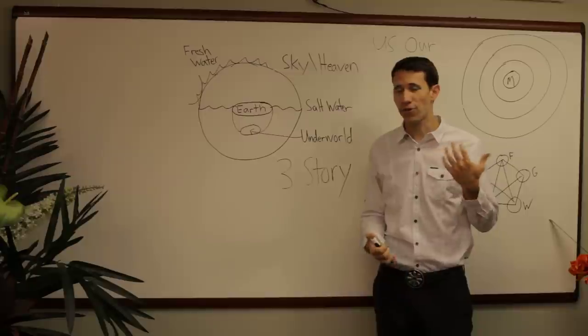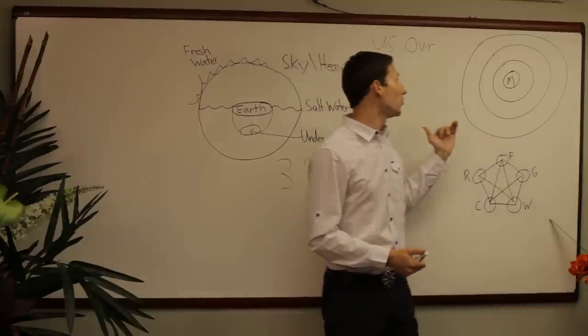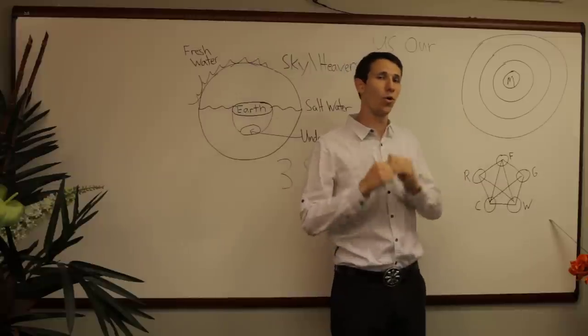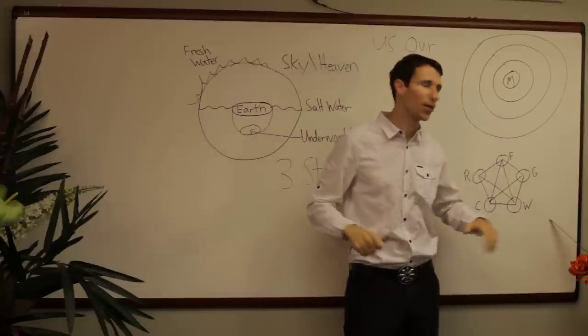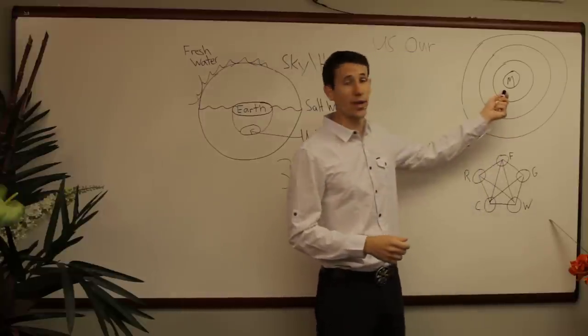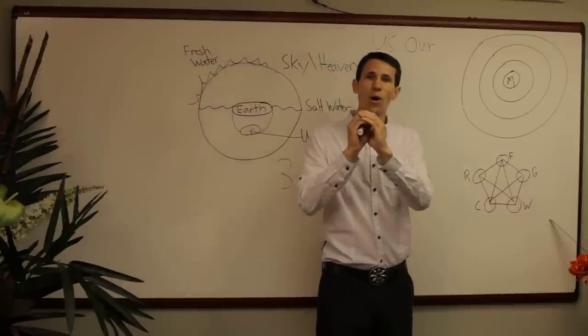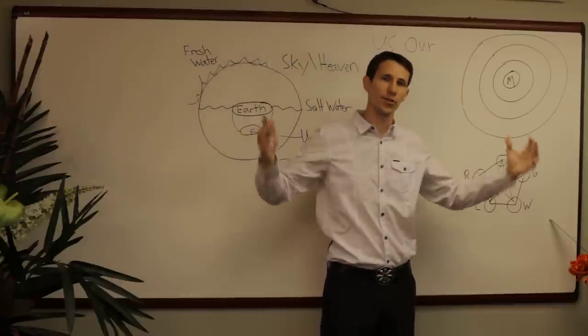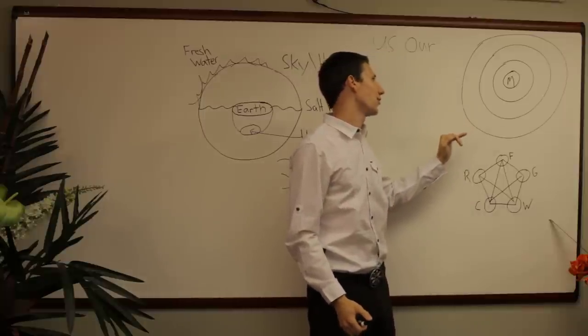Now, as we move into part three later today, we're going to see that there's a new way of understanding creation. Instead of this old model of having three levels or three stories, we're going to go into something called emanation, which is where there is one that overflows in concentric rings. That basically, at the very end, you'll get earth.